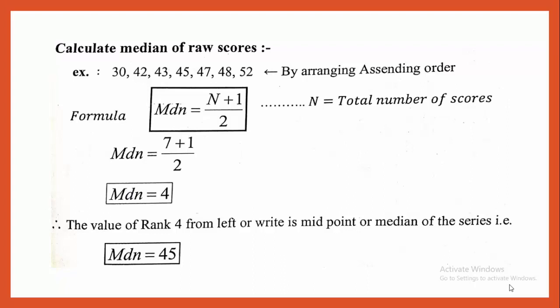Example: raw scores are 30, 42, 43, 45, 47, 48, and 52. By arranging in ascending order and using the formula (N + 1) / 2, here 7 raw scores are given, so we have (7 + 1) / 2 = 4. The value at rank 4 from left or right is the midpoint or median of the series. Therefore, median is equal to 45.